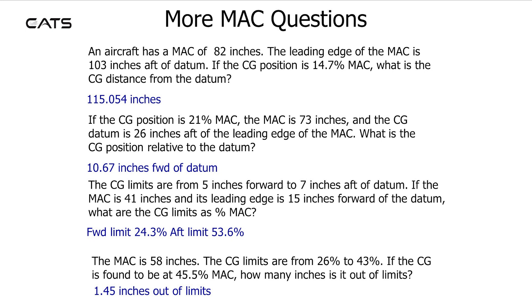If the CG position is 21% MAC, the MAC is 73 inches, and the center of gravity datum is 26 inches aft of the leading edge of the MAC, what is the CG position relative to the datum? 10.67 inches forward of datum.